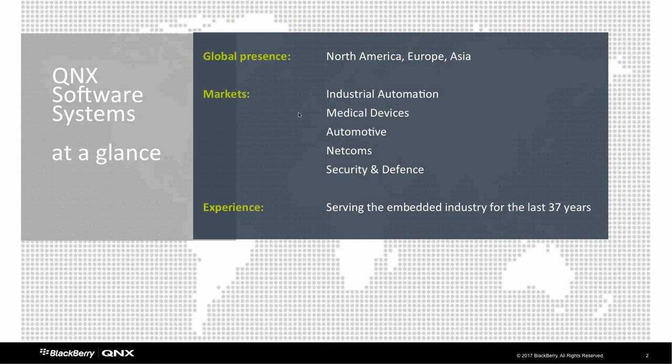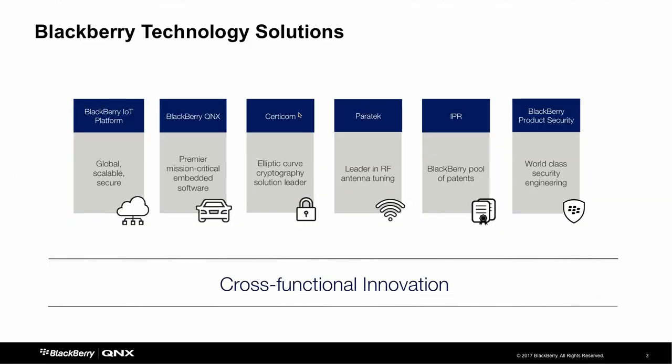Around the year 2000, we saw that vehicles were beginning to contain processing platforms that could make use of a 32-bit fully featured operating system, so we added automotive as one of our focus markets. We also work in net comms, security, and defense. Around 2010 we joined BlackBerry, which allowed BlackBerry to base its next generation of smartphone handsets on the QNX operating system. Today that's proving to be a real advantage as more embedded customers want to connect their devices to the internet, and BlackBerry's secure communications expertise brings real value to our embedded customers' projects.